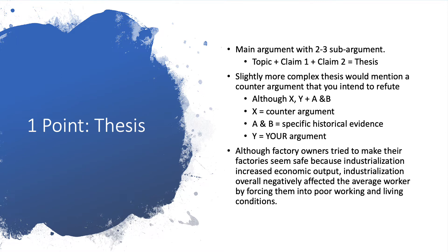I remember a problem with the quarter three DBQ essays — there were two documents basically saying factory work was good and child labor was awesome. Very clearly we all agree child labor is not great, but a lot of people's thesis said child labor is great because they just grouped the documents together. Instead I'd advise using a counter-argument like: 'Although factory owners tried to make their factories seem safe, because the Industrial Revolution increased economic output, the Industrial Revolution overall was negative to the average worker by forcing them to work in poor living and working conditions.' That gives three sub-arguments — one to refute and two to support the overall thesis.